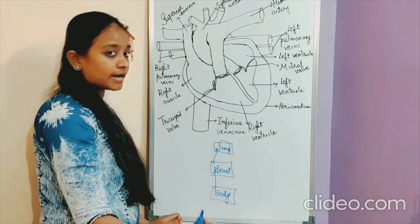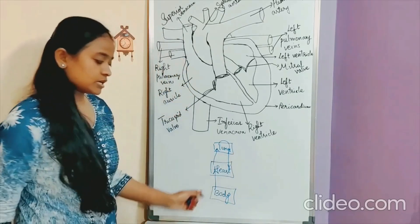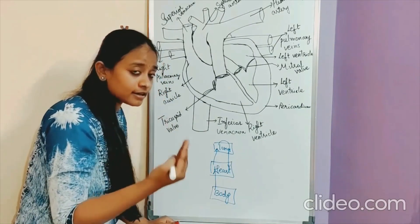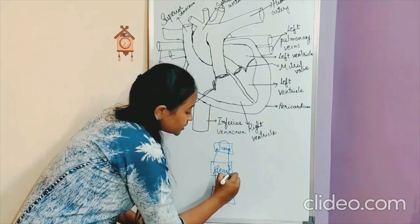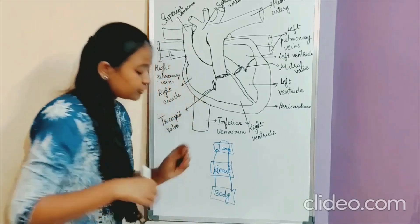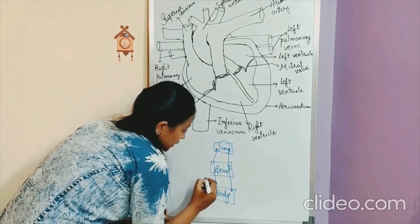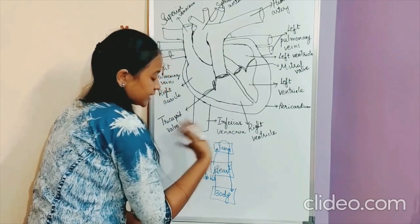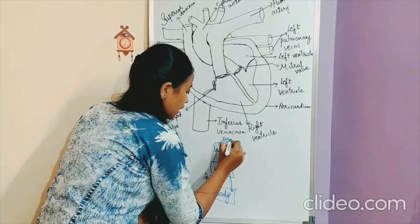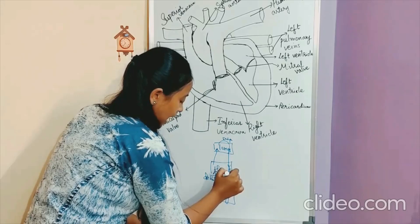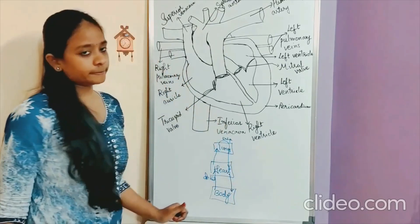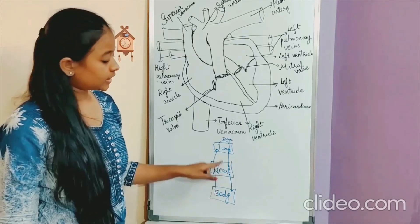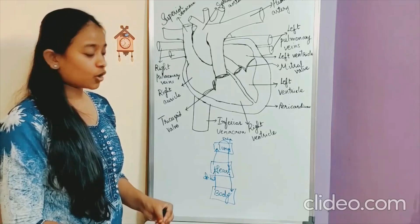The oxygenated blood from the lungs is again brought back to the heart, and the heart pumps this blood — now oxygenated through the lungs — back to all over the body. So, it is the deoxygenated blood from the body brought to the heart, which sends it to the lungs for exchange of gases. After exchange of gas, the lungs give the blood back to the heart and the heart pumps it to the body. The blood passes through the heart twice — that is why this type of circulation is called double circulation.